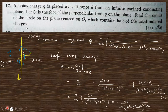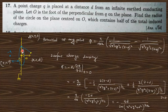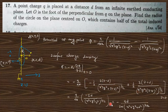Question 17: A point charge q is placed at distance d from an infinite grounded plane. Let O be the foot of the perpendicular from q. Find the radius R of the circle on the plane, centered at O, which contains half the total induced charge. From the potential expression, the surface charge density is σ = -(∂φ/∂z) evaluated at z = 0, yielding a known expression.